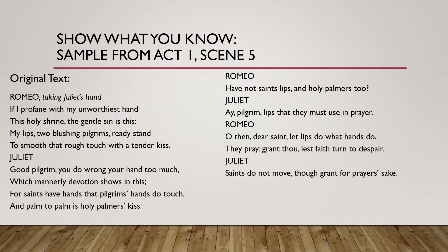I have a special guest with me today, Sean Lockery, who will be reading the parts of Romeo. Taking Juliet's hand: 'If I profane with my unworthiest hand this holy shrine, the gentle sin is this. My lips, two blushing pilgrims, ready stand to smooth that rough touch with a tender kiss. Good pilgrim, you do wrong your hand too much, which mannerly devotion shows in this. For saints have hands that pilgrims' hands do touch, and palm to palm is holy palmer's kiss. Have not saints lips and holy palmer's too? I, pilgrim, lips that they must use in prayer. Oh then, dear saint, let lips do what hands do. They pray, grant thou, lest faith turn to despair. Saints do not move, though grant for prayer's sake.'